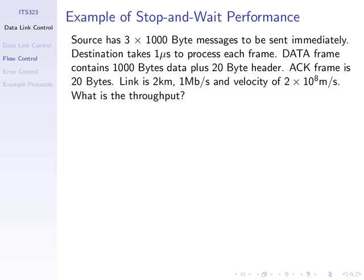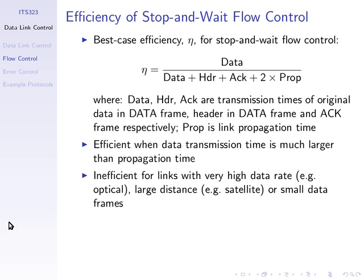The main factors that impact stop-and-wait performance are the size of the data and the propagation delay. The header size impacts performance, but normally the header size is very small compared to the data — in our example just 20 bytes compared to 1,000 bytes of data. So the header size and processing delay are normally quite small.